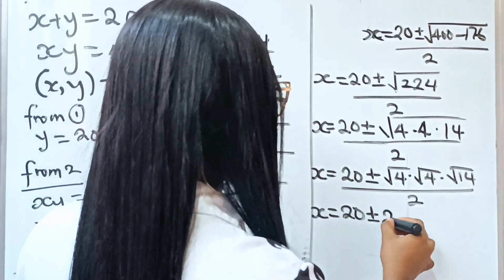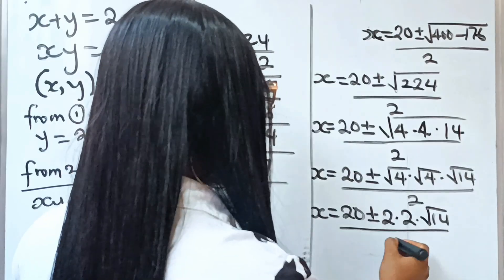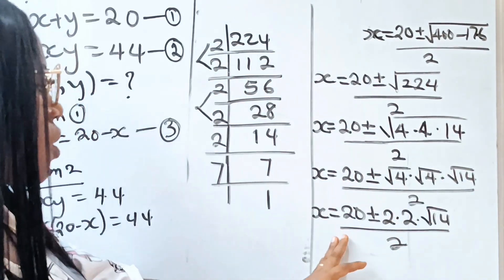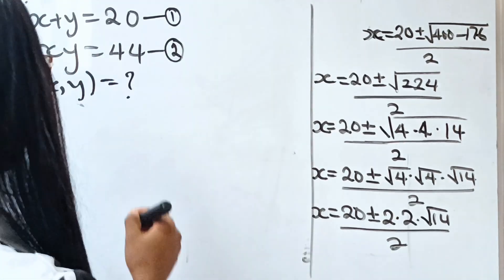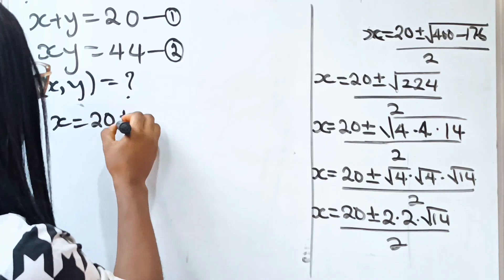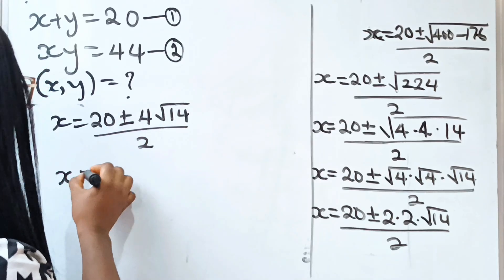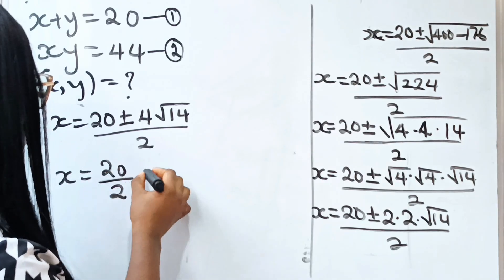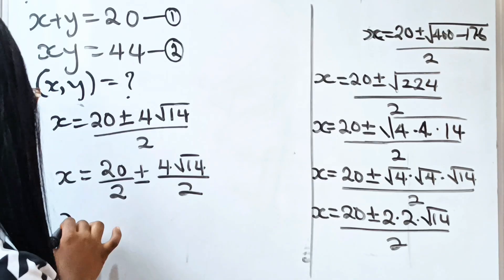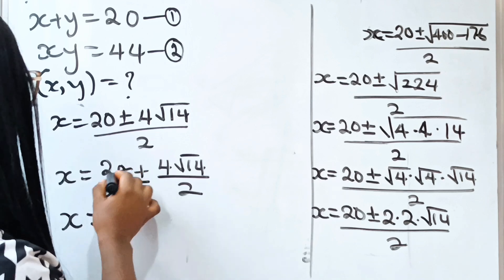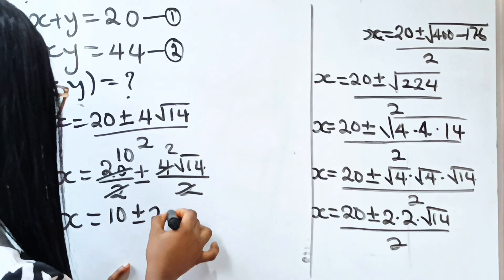The square root of 4 is 2, and the square root of 4 is 2 again, and we have root 14, divided by 2. So from here, x is 20 plus or minus 4 root 14, divided by 2. Dividing through by 2 gives us x equals 10 plus or minus 2 root 14.